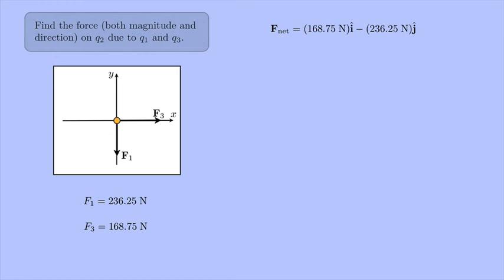To get the magnitude, I can use the Pythagorean theorem, essentially. And I get F net equals 168.75 newtons squared plus negative 236.25 newtons squared and then the square root of all that. And that gives me 290 newtons.